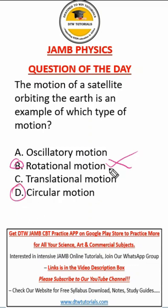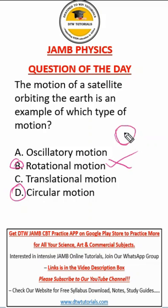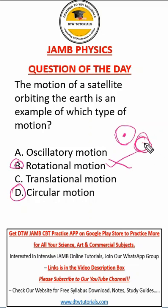Let me quickly tell you the difference between rotational and circular motion. Rotational motion is when a body rotates on an axis that is inside the body. An example of rotational motion is the wheels of a moving car — the tire rotates inside the body. Another example is the rotating blades of an electric fan in the house — the body rotates and the axis is inside the body.